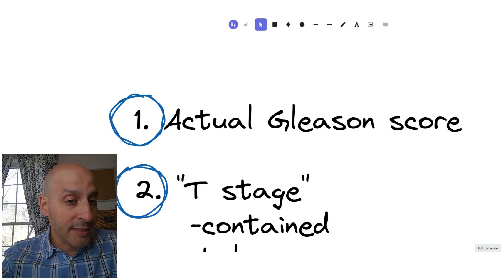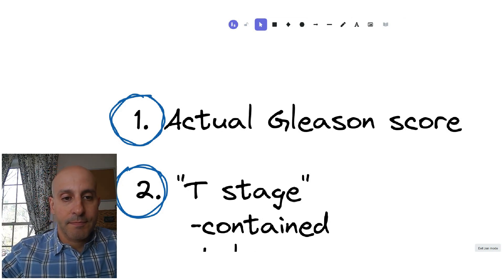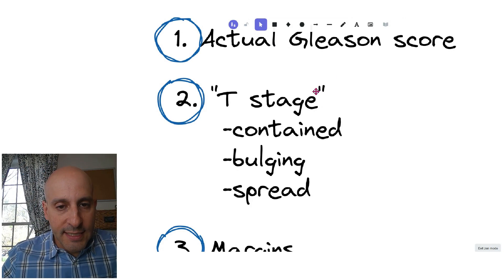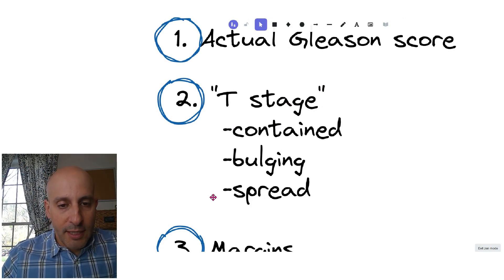And this can change between the biopsy and what we call the final pathologic Gleason score. Sometimes the score stays the same, sometimes it goes down, sometimes it goes up. Then we're going to find out the T stage. Was the cancer contained, bulging, or did it spread?